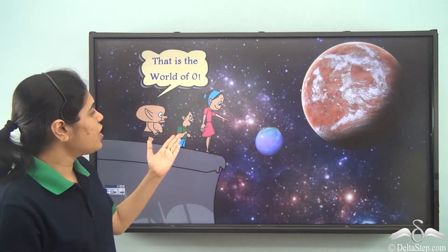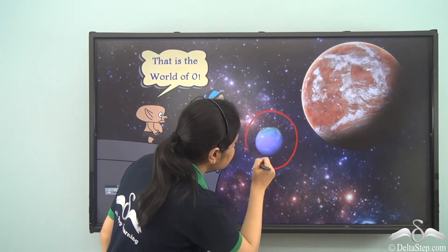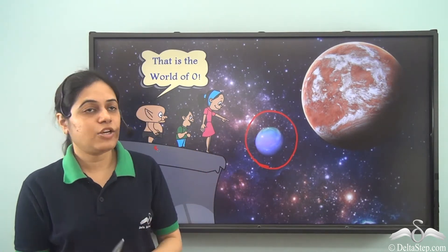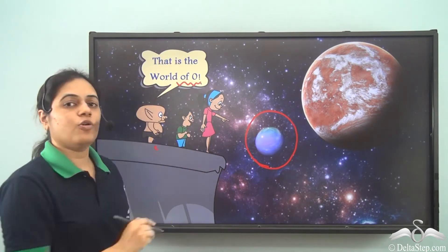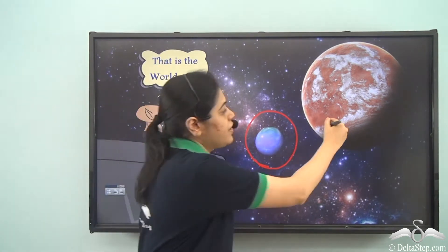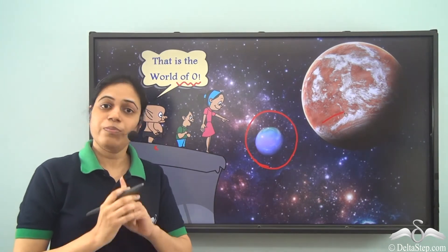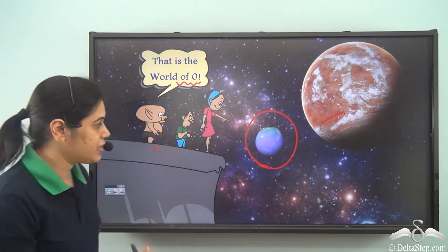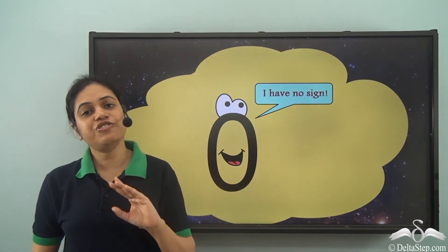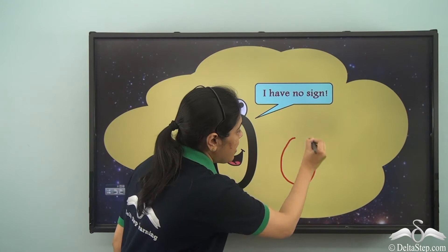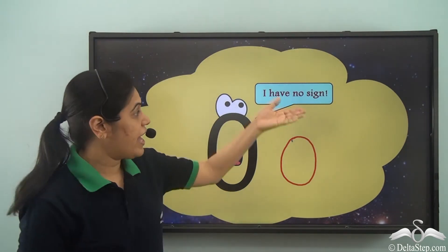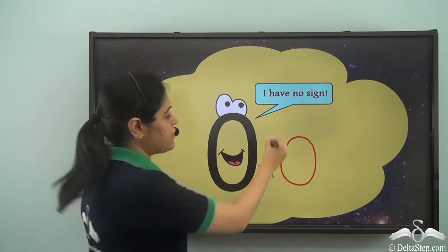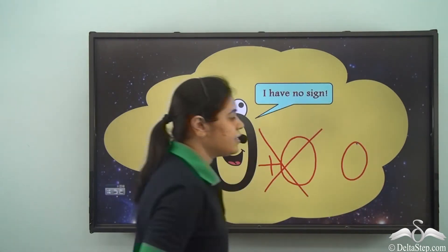Suddenly Rohan and Riya saw a very small world and asked the goblin what it was. The goblin said it is the world of zero. Zero does not live in the world of positives — we know the number zero, but it has its own world where just one number stays, and that is zero. Zero has no sign or symbol in front of it and does not have a positive sign — it is simply zero.